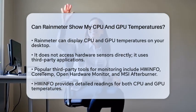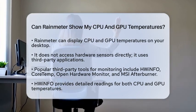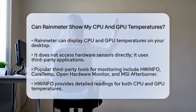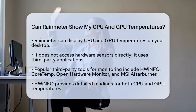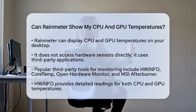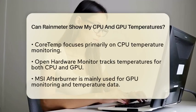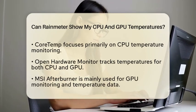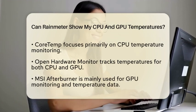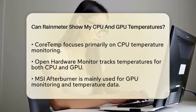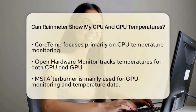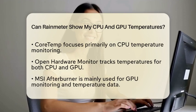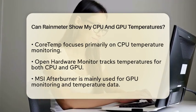To get started, you will first need to install a third-party hardware monitoring tool. Some of the most commonly used programs include HWINFO, CoreTemp, Open Hardware Monitor, and MSI Afterburner. HWINFO is a comprehensive tool that supports a wide range of sensors and provides detailed temperature readings for both your CPU and GPU. CoreTemp focuses mainly on CPU temperature monitoring, while Open Hardware Monitor can track both CPU and GPU temperatures. MSI Afterburner is often used for GPU monitoring and can also provide temperature data.